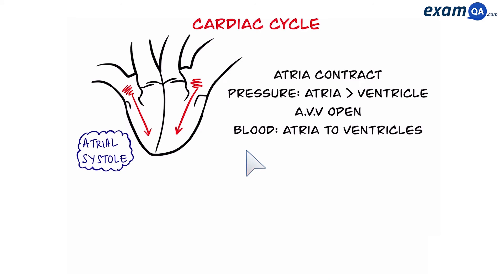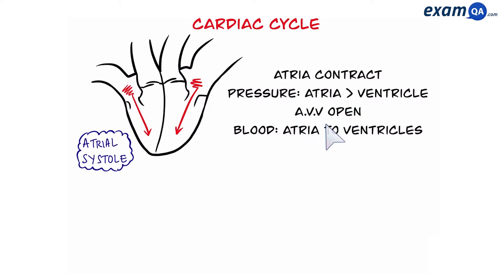In atrial systole, the atria will contract. When they contract, this causes the pressure in the atria to become greater than the pressure of the ventricles. As a result, the atrioventricular valves — which are the valves between the atria and the ventricles — will open, and this causes blood from the atria to move into the ventricles.